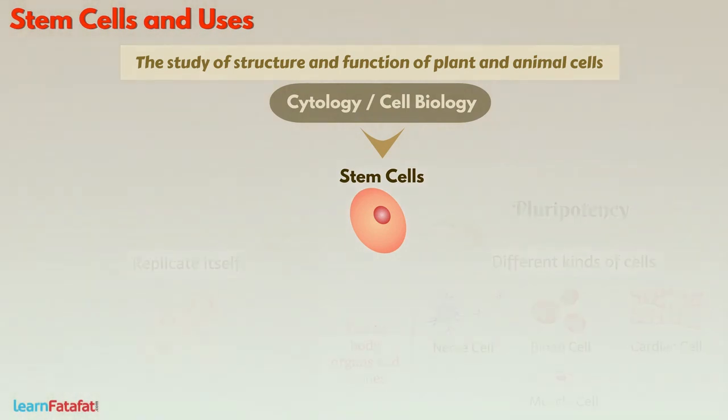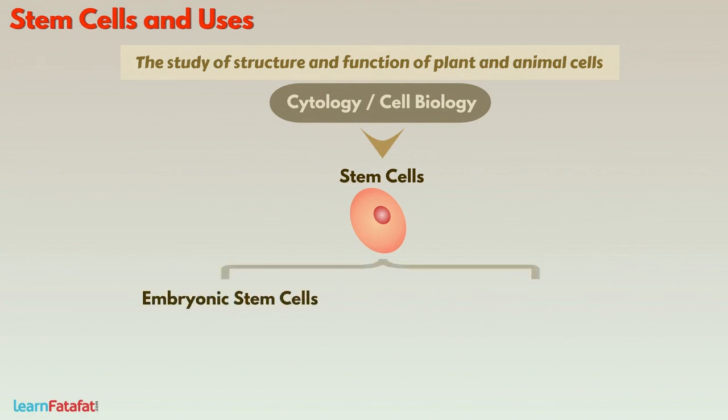Based on source — where the stem cells can be found — these are of two kinds: Embryonic Stem Cells and Adult Stem Cells.